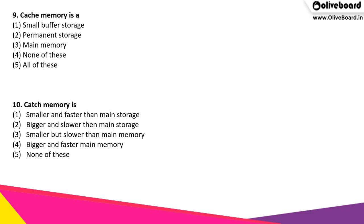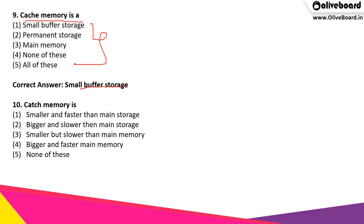Cache memory is a what? Out of the following options, what is the correct answer? The correct answer is option 1, that is small buffer storage. It stores particular information or data temporarily as a buffer storage.